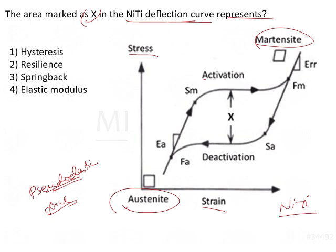The material converts from austenite to martensite on activation, and then again from martensite to austenite on reactivation. The stress-strain graph basically tells us the load deflection rate and the elasticity of the material. When force is applied, the austenite is converted into martensite at a particular force level. But when the martensite is going back and being deactivated into austenite, the force level is not the same — there is a difference in the force value.